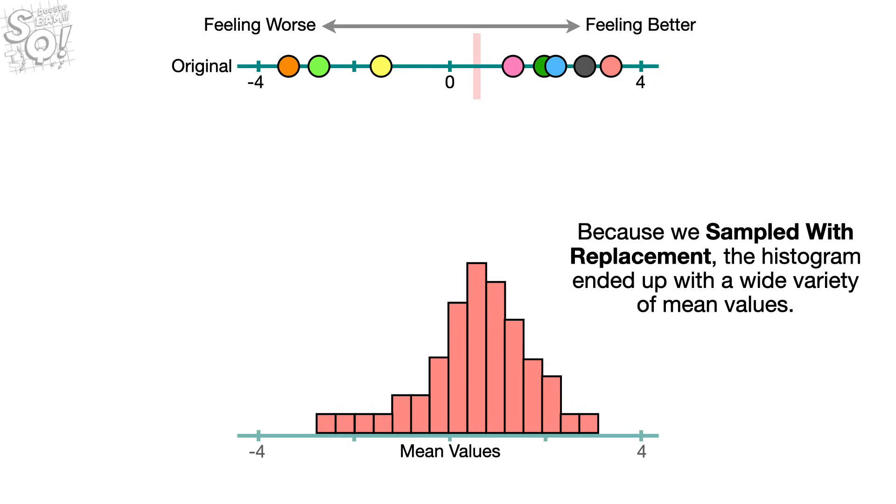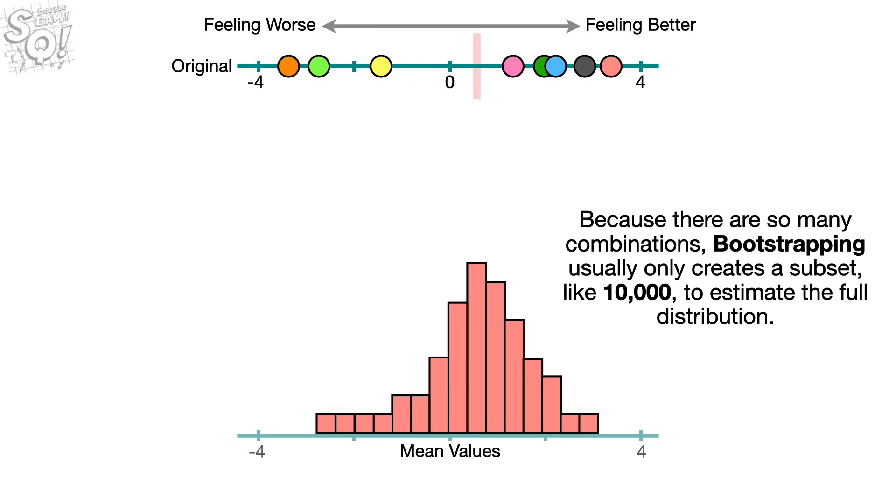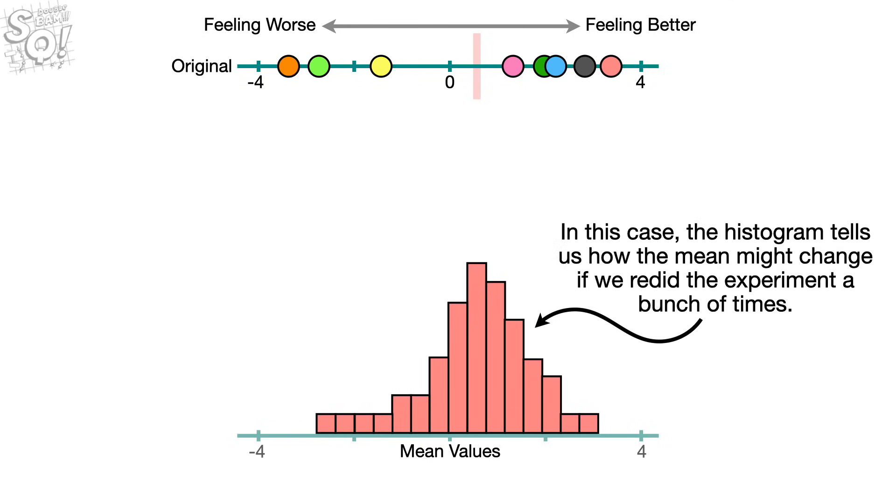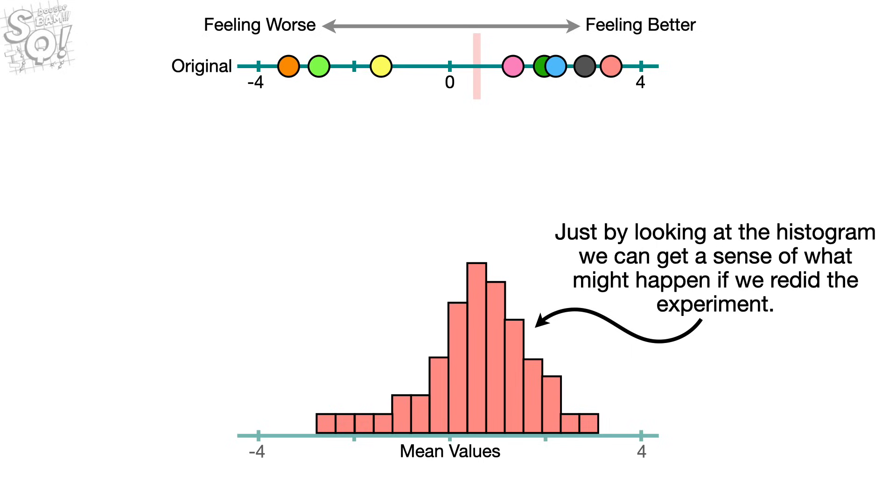Because we sampled with replacement, the histogram ended up with a wide variety of mean values. Because there are so many combinations, bootstrapping usually only creates a subset, like 10,000, to estimate the full distribution. In this case, the histogram tells us how the mean might change if we redid the experiment a bunch of times.